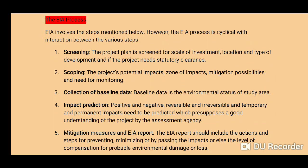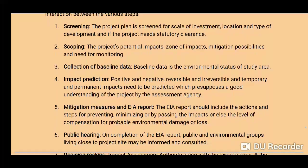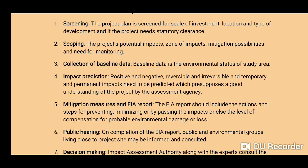The EIA process involves the following steps. The process is cyclical with interaction between the various steps. The first step is screening — the project plan is screened for scale of investment, location, and type of development, and whether the project needs statutory clearance.